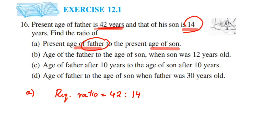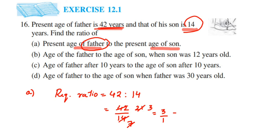But this ratio is not in reduced form, we have to make it reduced. For that I'm going to convert this into a fraction: 42 upon 14. Cancel in 2 tables — two 7s are 14, two 21s are 42 — then 7 ones and 7 threes, so we get 3 by 1. So the ratio will become 3 is to 1.